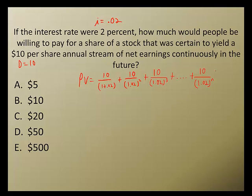Well, we can use this trick. The present value equals D divided by I. So that's going to equal $10 divided by .02, and that is going to equal $500.